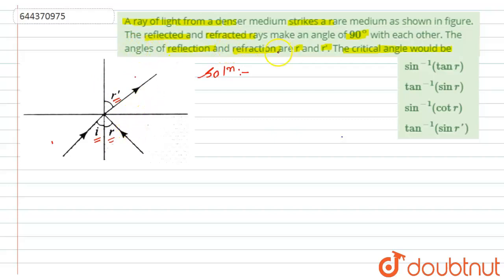While the reflected and refracted ray making an angle of 90 degrees. Now according to this situation we have to find here the critical angle.